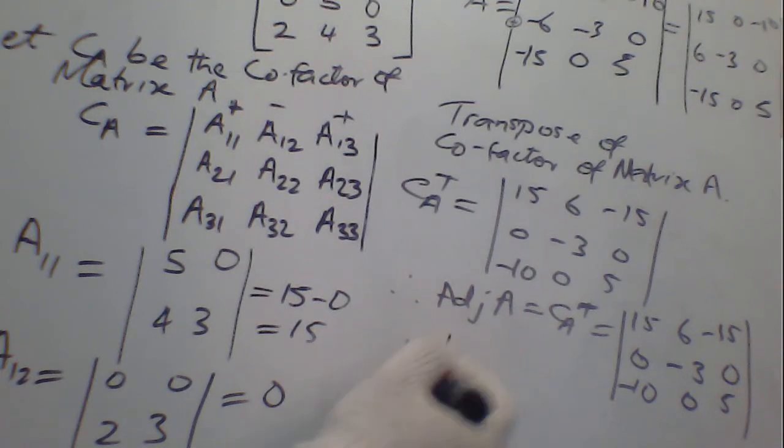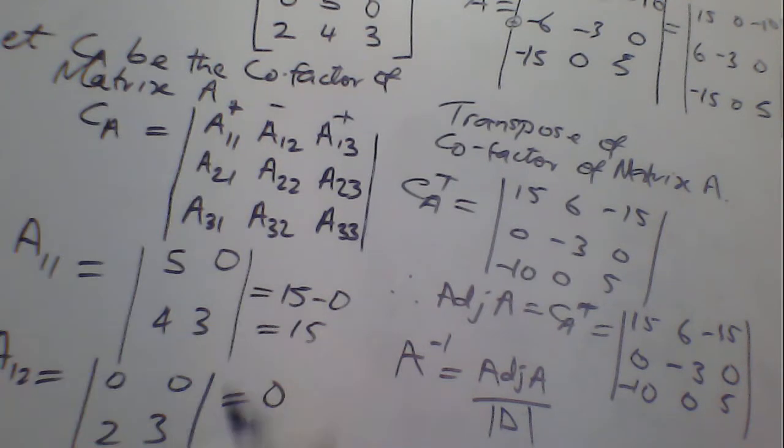The inverse of matrix A goes to what? The adjoint A divided by what? The determinant. Determinant of A. So, the next is to what? To find the inverse of, if you are asked to find the inverse of matrix A.